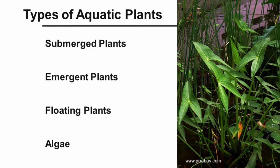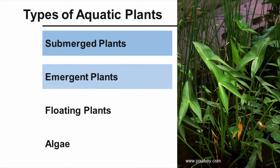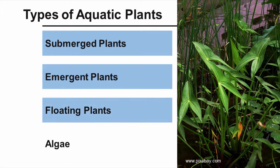The plants can be categorized into four main types: submerged plants, emergent plants, floating plants, and algae. Let's take a look at each of these in more detail.